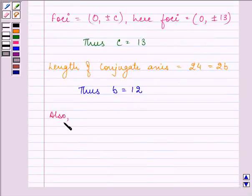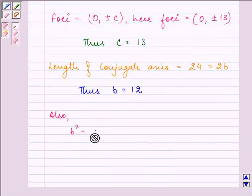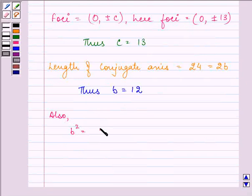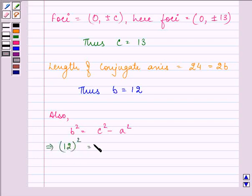Also we know that b² = c² - a². Now we know the value of b as 12. So it will be 12² = c is 13, so 13² - a².